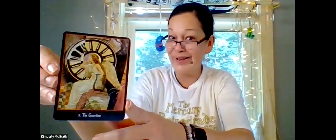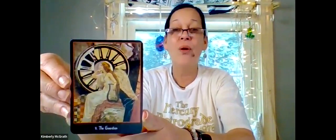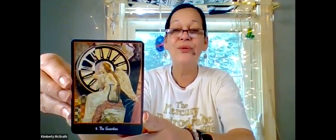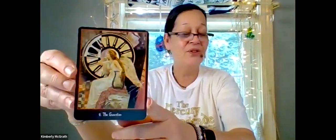Aries, you have the Guardian card, number nine, which is one path is ending, a new one is beginning. There's something coming to a completion and a new beginning is starting. This is about taking your time to become aware of and be prepared for all contingencies by making your home base secure so you feel safe and protected. This is calling in your guardian angels. I like that.